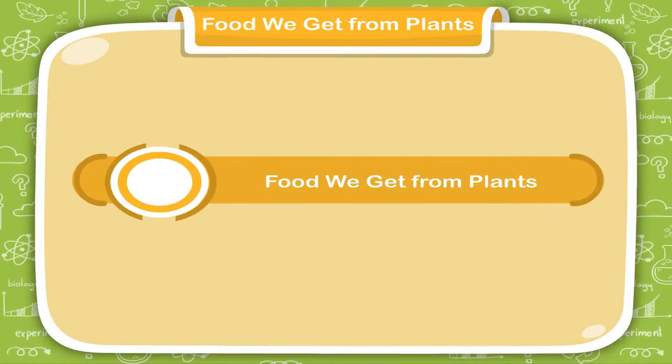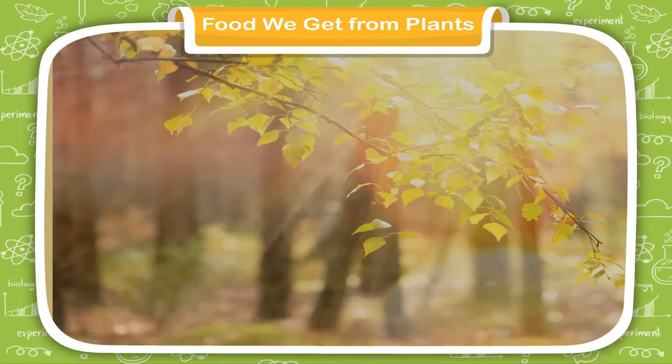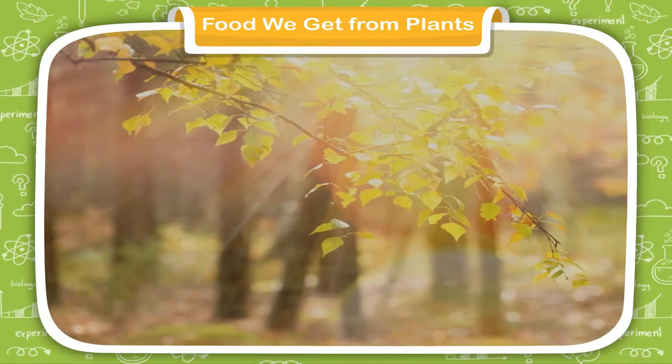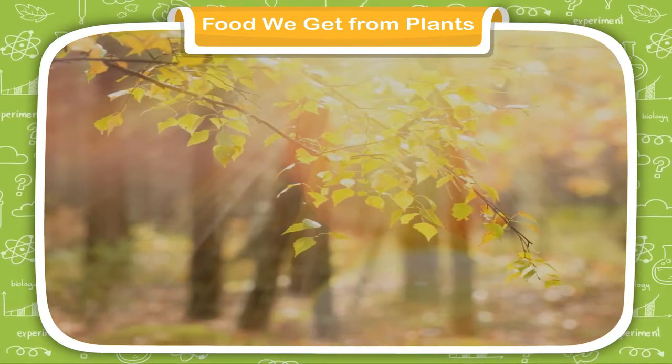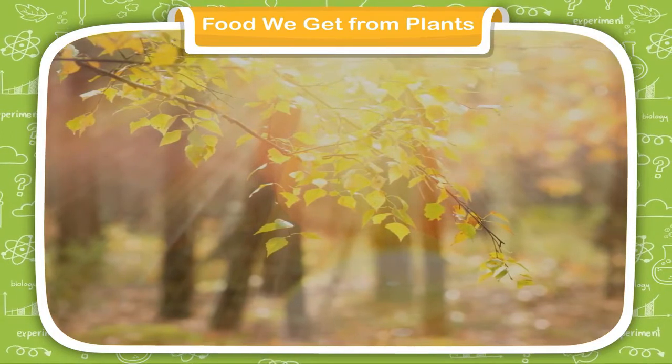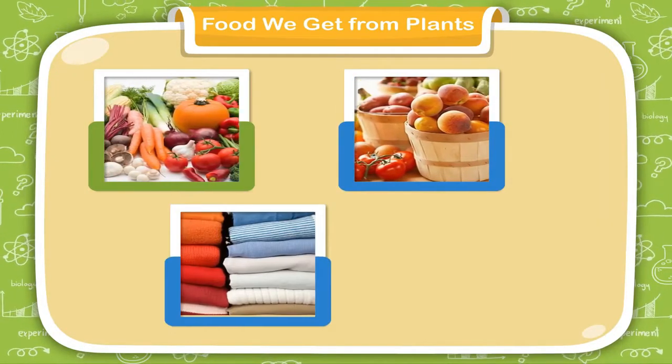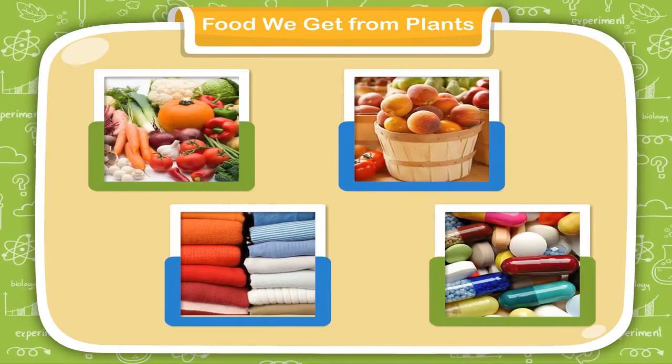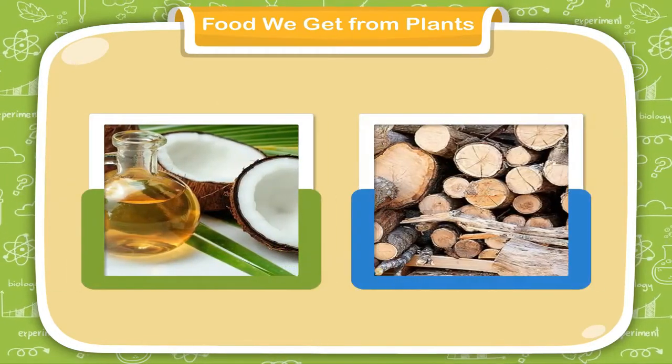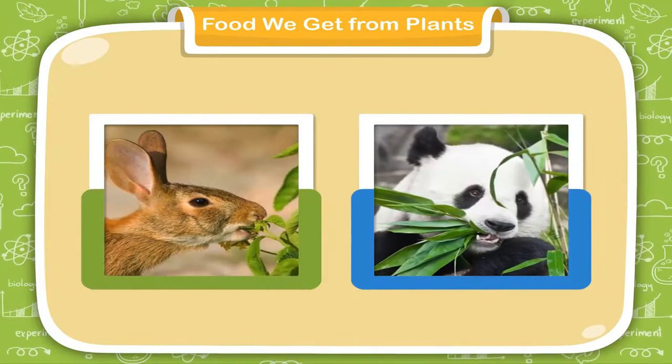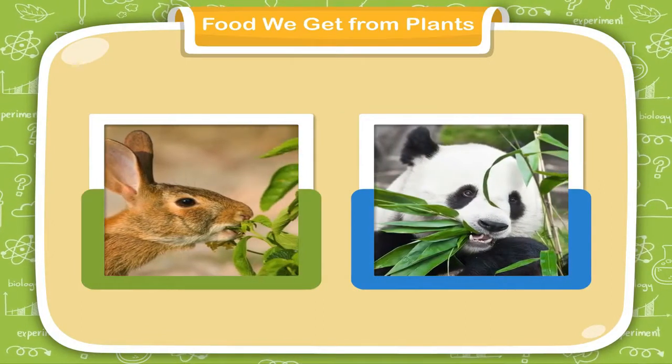Food we get from plants. Plants are very useful to us. They give us shade and fresh air to breathe. They also give us vegetables and fruits to eat, clothes to wear and medicines, oil, wood, etc. Animals also depend on plants for their food.